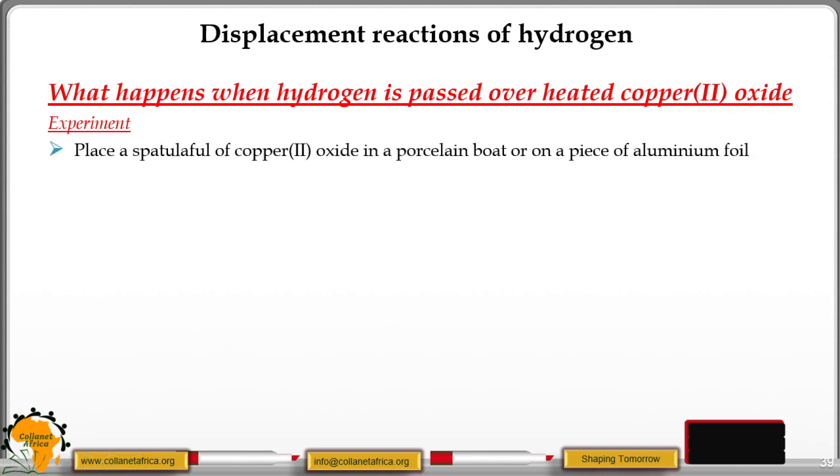Place a spatula full of copper oxide in a porcelain boat on aluminum foil. Place the boat on aluminum foil in a combustion tube. Set the apparatus as shown in the next slide.